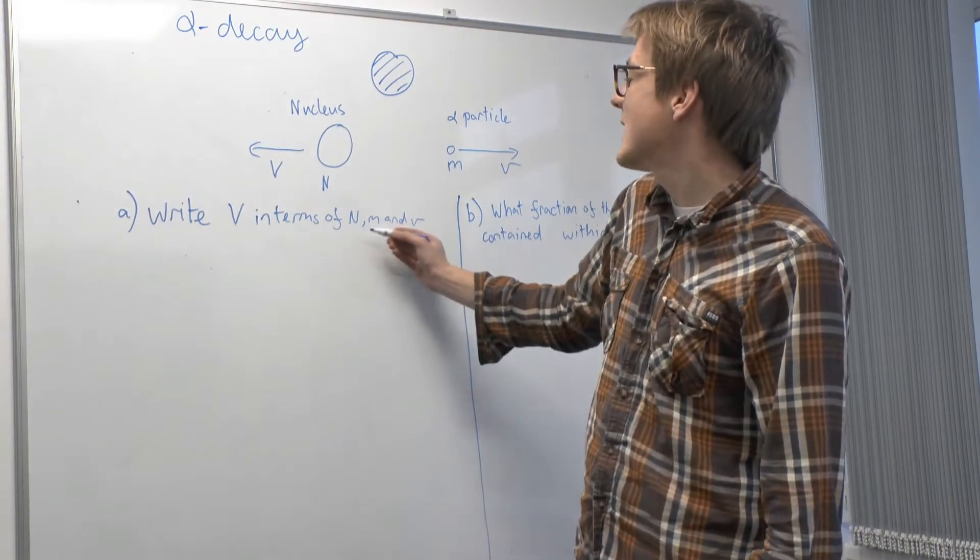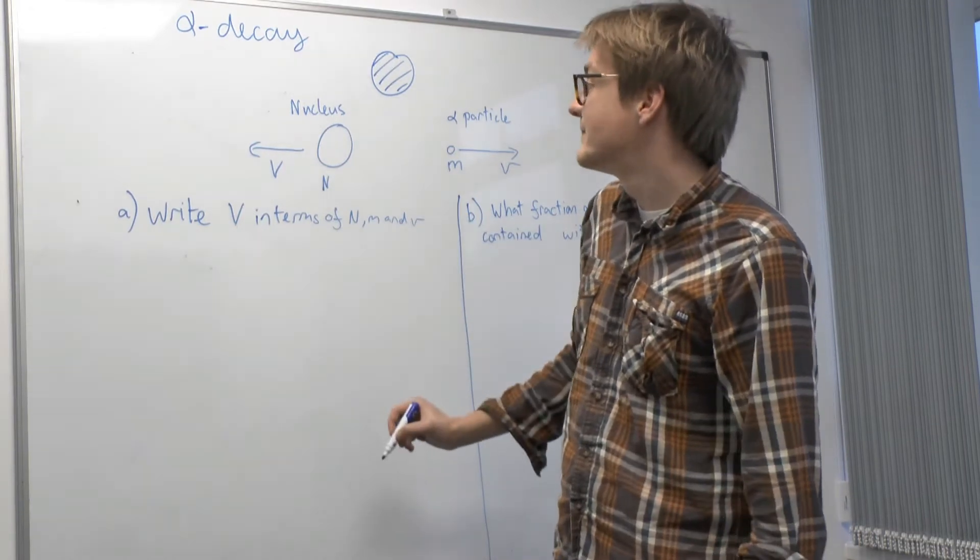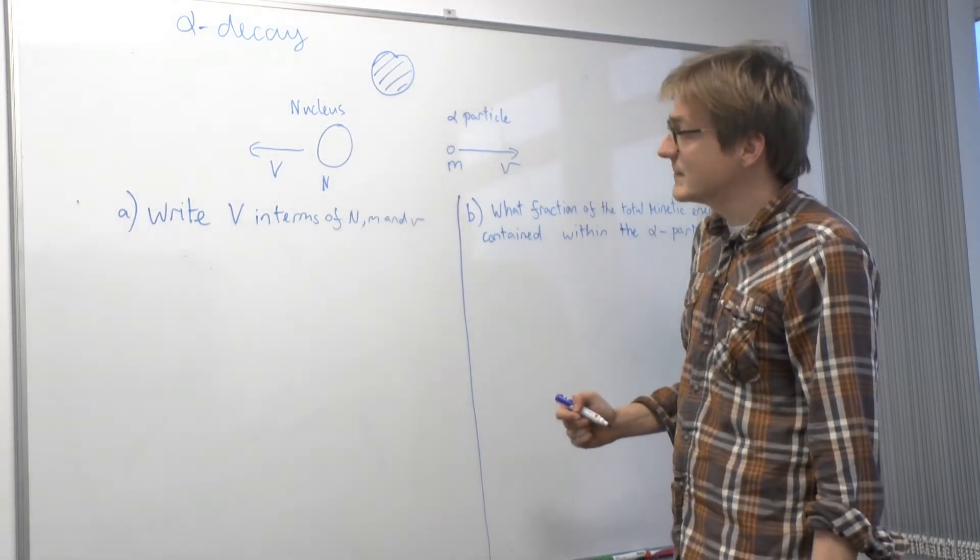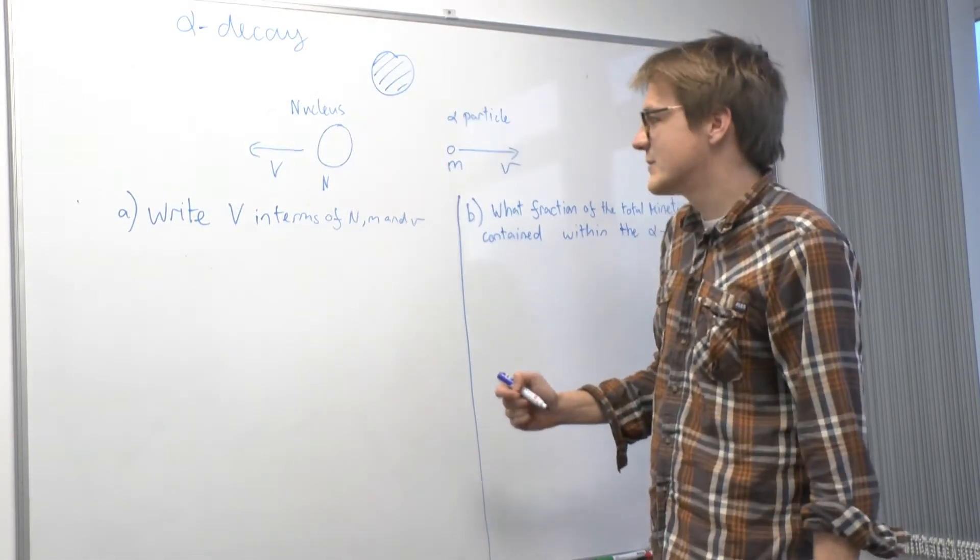Write V in terms of big N, little m and little v. So if there are no external forces acting on the system, then there is conservation of momentum.